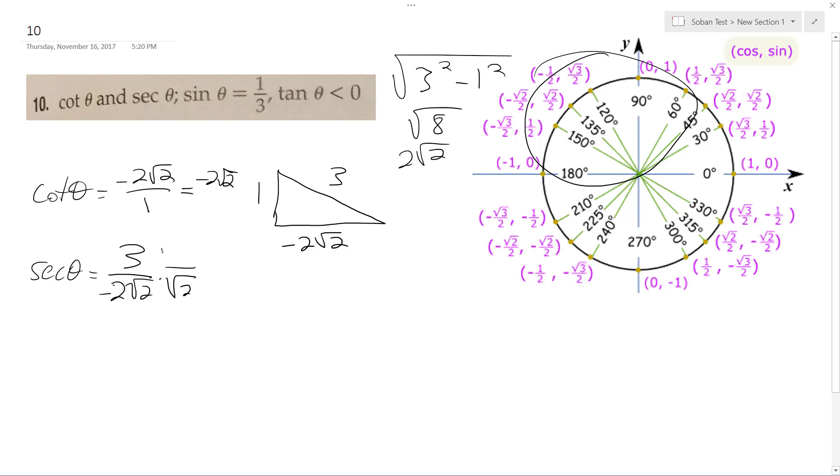Rationalize the denominator. So here, what I end up with is negative 3 root 2 over 2, which is 4, becomes 4.